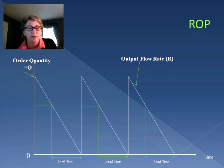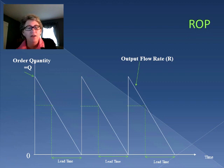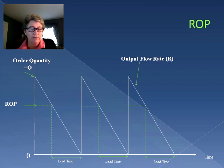We've placed the order at some point T, and then it's going to arrive sometime later. The amount of inventory that we use during that lead time is our lead time demand, and that's what equals the reorder point. Very simple.